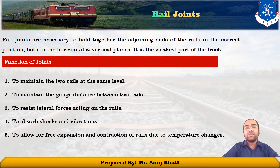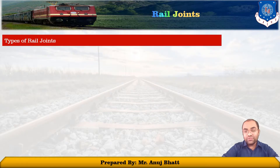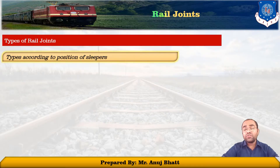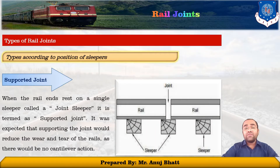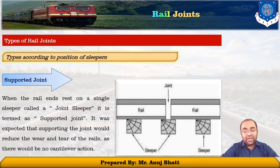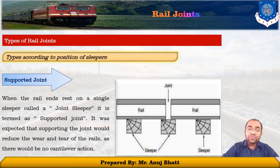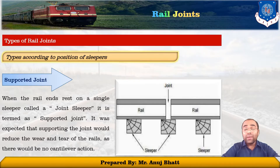There are different joints that we provide in the rail sections. Let us see what are the types of rail joints. According to the position of sleepers, we have three different types. The first one is the supported joint. When the rail ends are raised on a single sleeper, that is called the joint sleeper and it is termed as the supported joint. It was expected that the supporting joint would reduce the wear and tear of the rails as there would be no cantilever action.